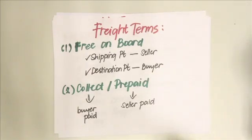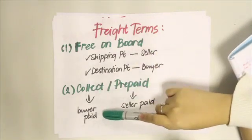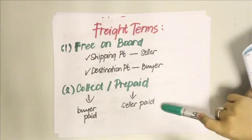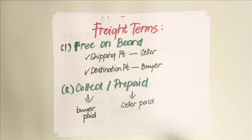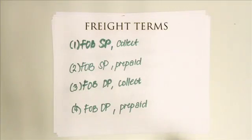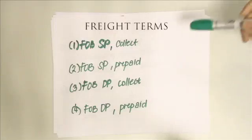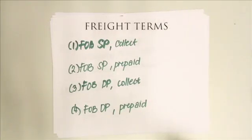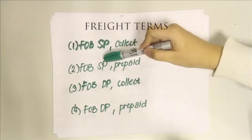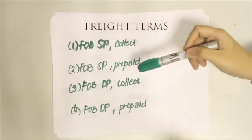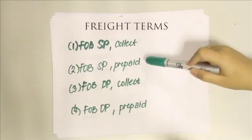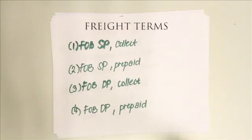Collect and prepaid refer to who actually paid the cash for freight — if it's collect, the buyer paid; if prepaid, the seller paid. There are four combinations: if FOB shipping point and collect, the buyer has the obligation and paid the freight, so there is no liability between buyer and seller. If FOB shipping point and prepaid, the buyer has the obligation but the seller paid, meaning the buyer has a liability to the seller.